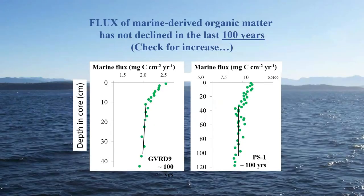Skipping over many details and lots of other slides in the interest of time, jumping to the end: the answer, based on that marine end member, is that the flux of marine-derived organic carbon has not increased or declined over the last hundred years — not just since the 1970s, but over the last hundred years in Strait of Georgia or Puget Sound.